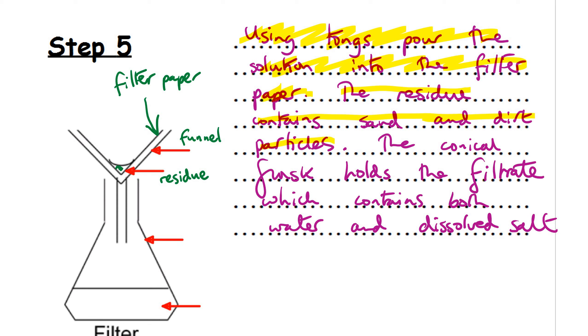The conical flask holds the filtrate which contains both water and dissolved salt. So we've got our conical flask here. And remember, the rock salt contained sand and dirt. We've separated those out now. Now what we've got left is the filtrate, which is salt water. Okay. We need to get at this salt. We've got to remove the water, right? So let's have a look at the video again.